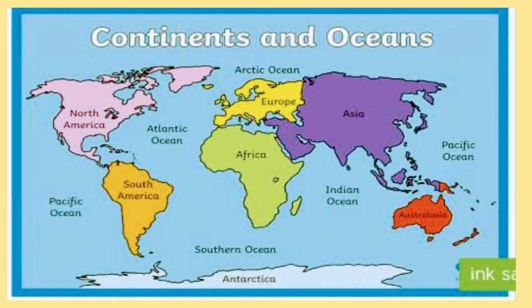Now you can see in this map, you can see the continents here. See the first one — here you can see Asia, right? You can see Asia here and Africa here. The next is Europe.